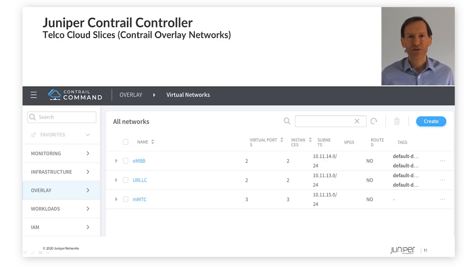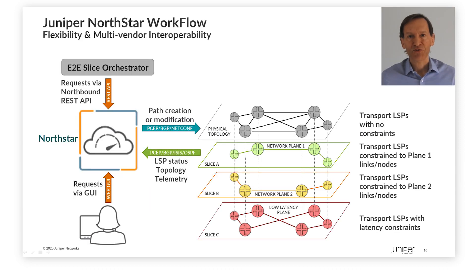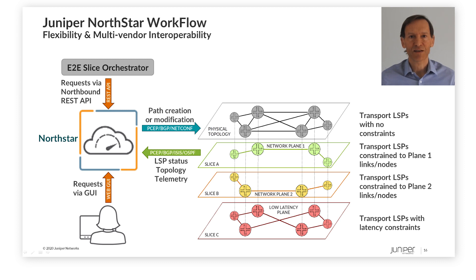Here is a view of the Contrail user interface where we can see three virtual networks: mobile broadband, ultra-low latency, and massive machine communications. The NorthStar controller creates meshes of LSPs to underpin the network slices, triggered by API calls from the orchestrator. NorthStar computes the paths of the LSPs and instantiates them onto the network. It can dynamically tune the paths of LSPs during their lifetime — for example, if congestion occurs or if a path with better latency becomes feasible.